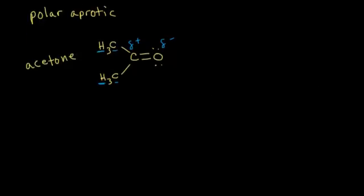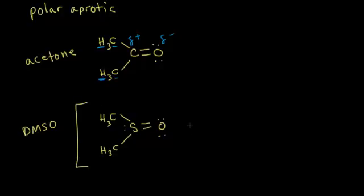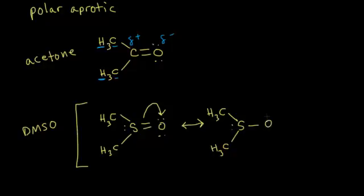Another example of a polar aprotic solvent has a similar structure to acetone. If we put a sulfur instead of a carbon, double bonded to oxygen, with two methyl groups and a lone pair of electrons on the sulfur atom, this is DMSO — dimethyl sulfoxide. DMSO also has a resonance structure: the lone pair of electrons on sulfur can kick off onto the oxygen. In the resonance structure, sulfur has a positive one formal charge and oxygen has a negative one formal charge.